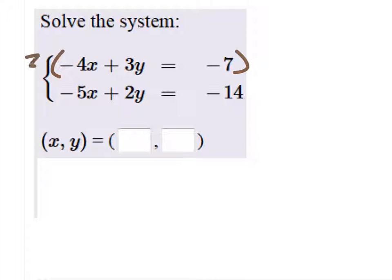So I'll multiply this equation by 2, which gives me a new equation: negative 8x plus 6y equals negative 14.